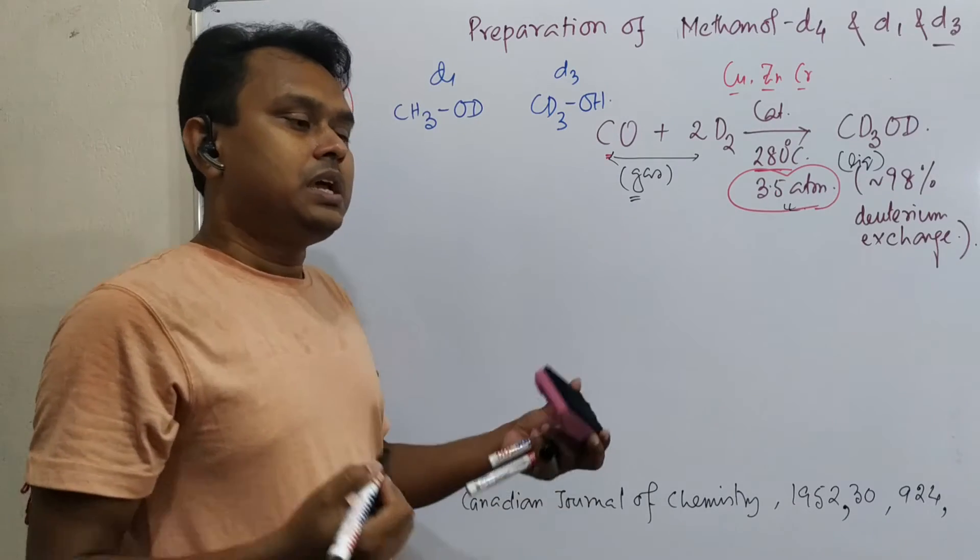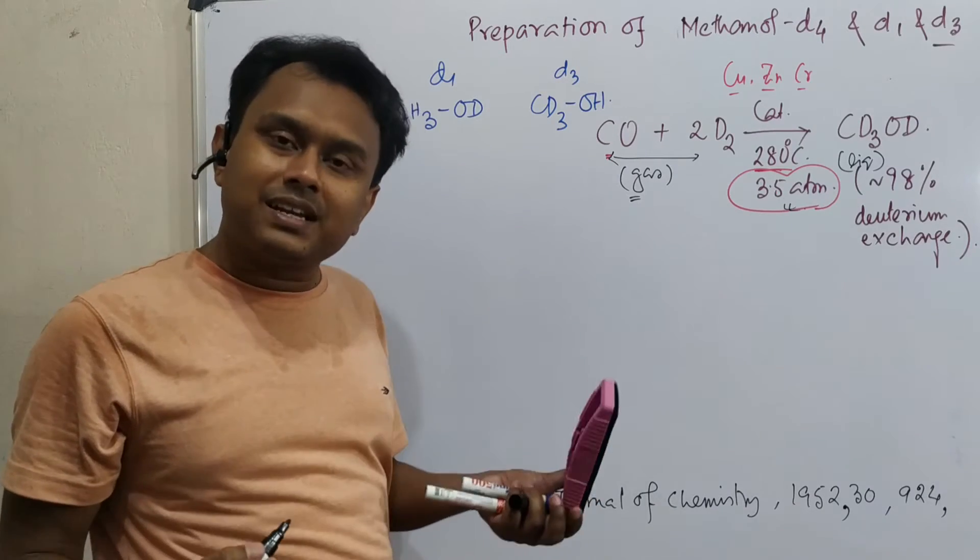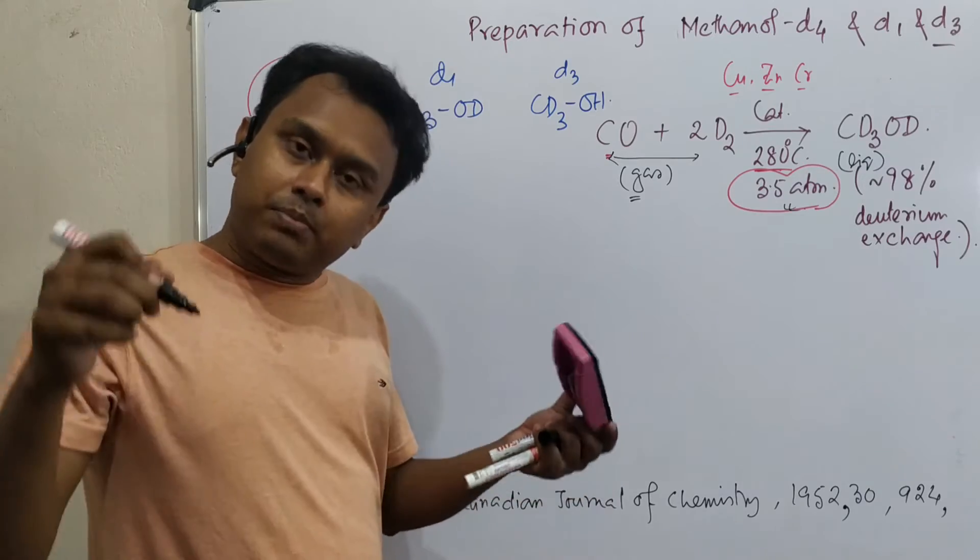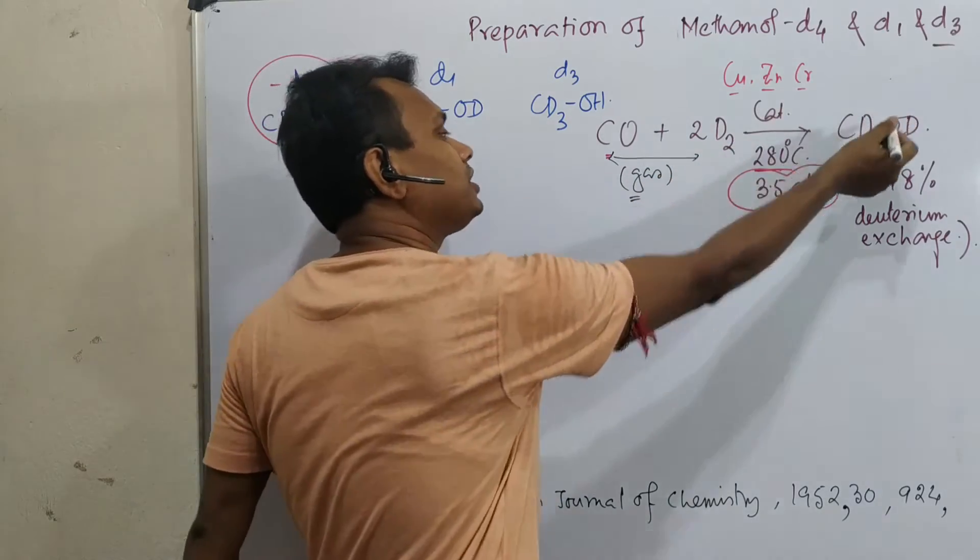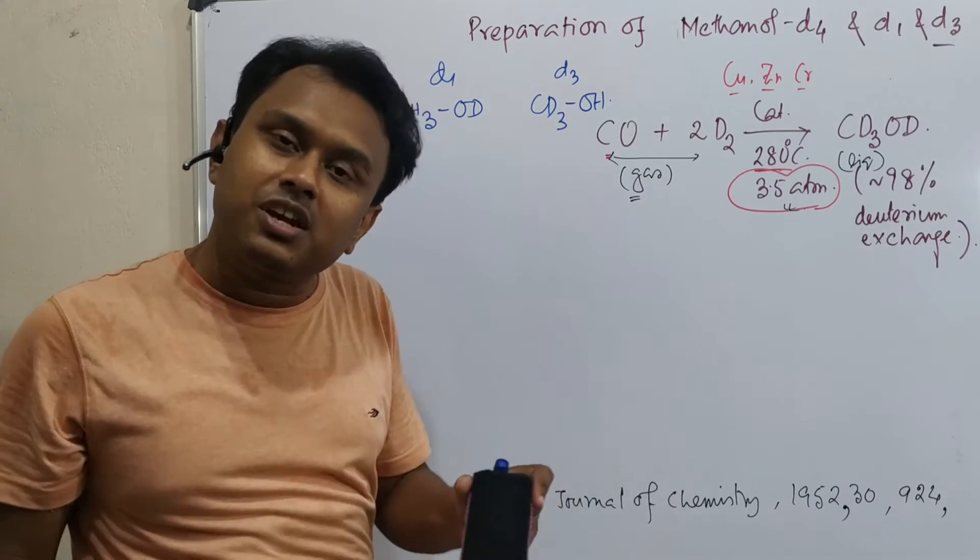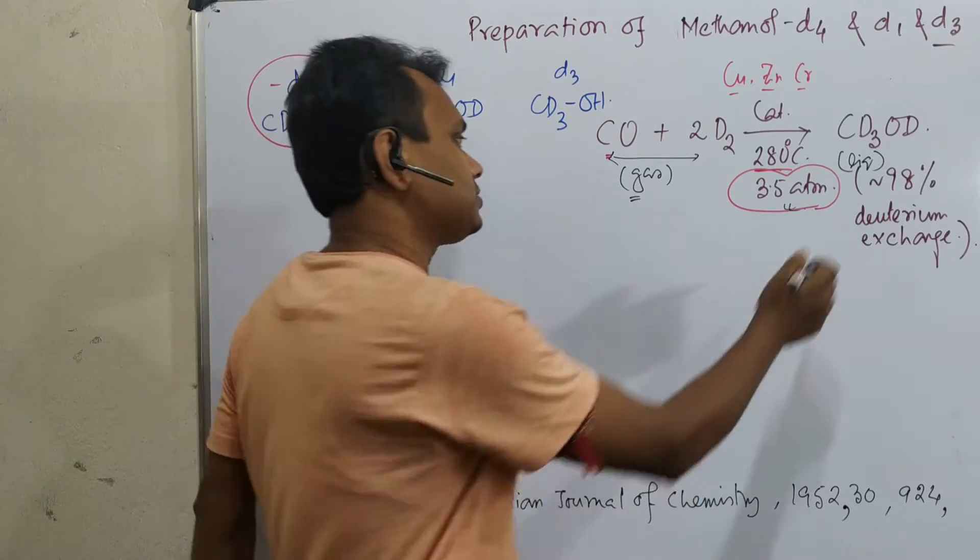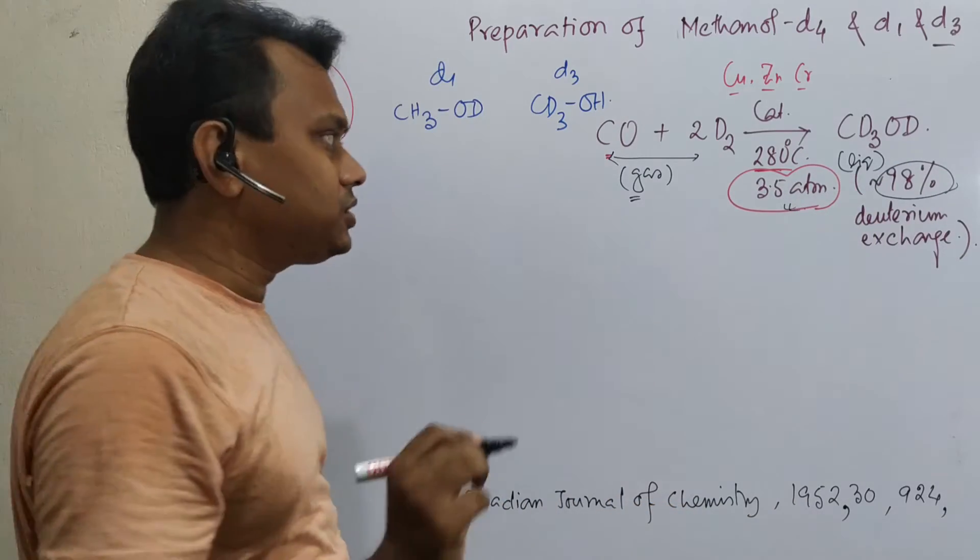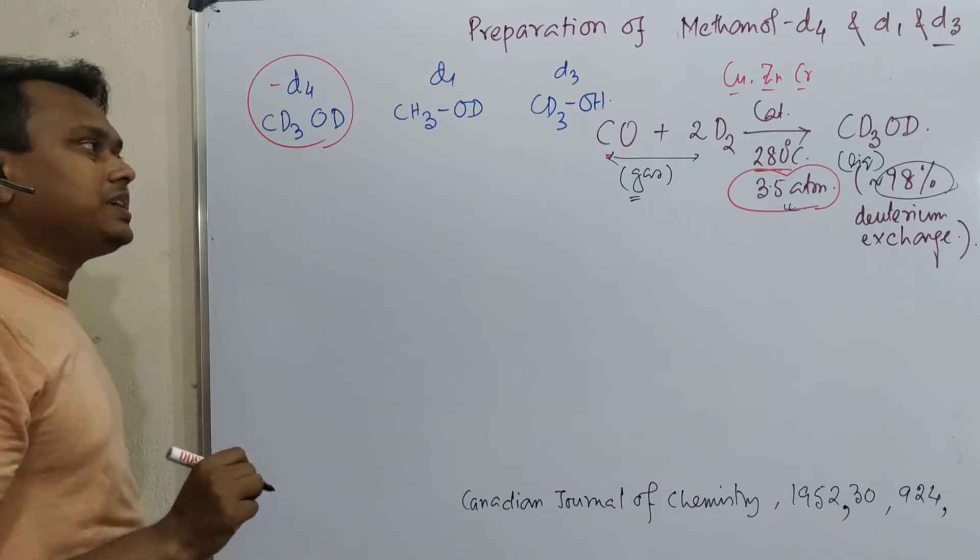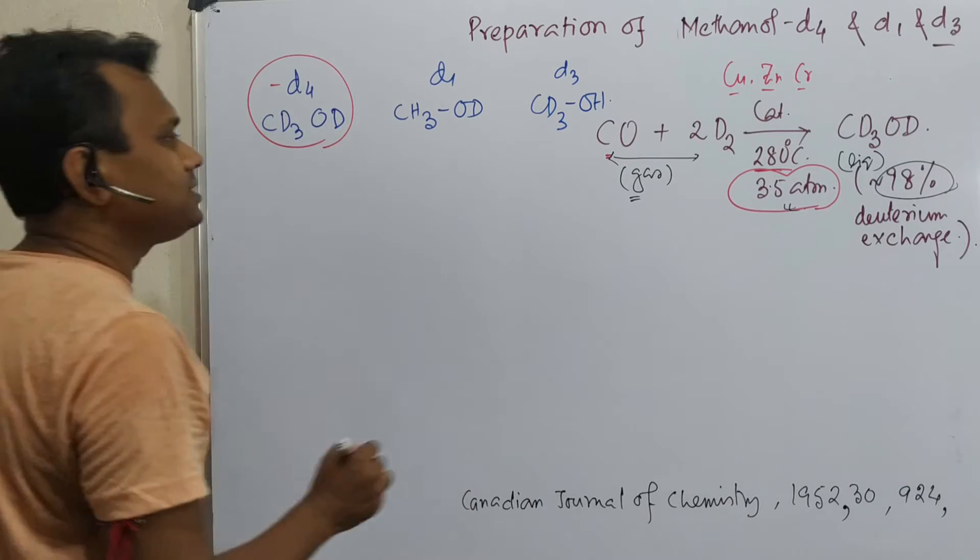And according to Le Chatelier's principle, if the product is liquid and reactants are gas, if you increase the pressure, reactant prefer to convert into product such that it can neutralize the external high pressure. And 98 to up to 98% deuterium exchange you can achieve. So in this way the reaction occurs to produce this CD3OD.